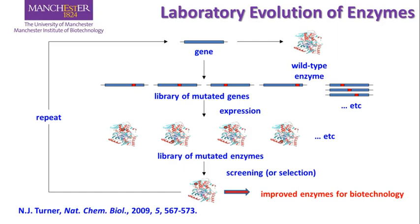The first step is to take the gene which codes for the enzyme of interest and generate a library of randomly mutated genes — this is where the natural variation is generated. In the second step, that library of mutated genes is converted to a library of mutated enzymes. In the third step, a screening process takes place, akin to natural selection, where we deliberately screen in the laboratory for specific enzymes with specific characteristics. We identify improved enzymes by this process, and then we can take the best enzyme and put it back through the process again for a second, third, fourth, or fifth round of laboratory evolution until we have a perfectly optimized enzyme.